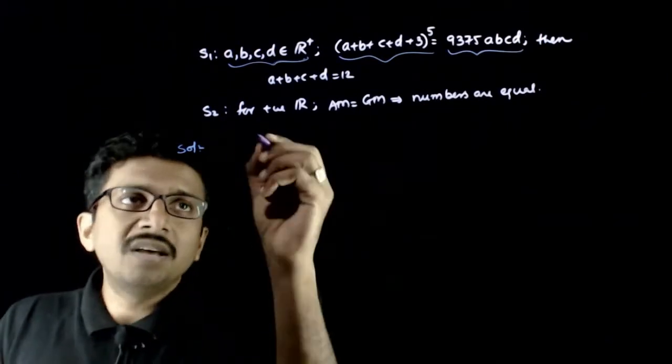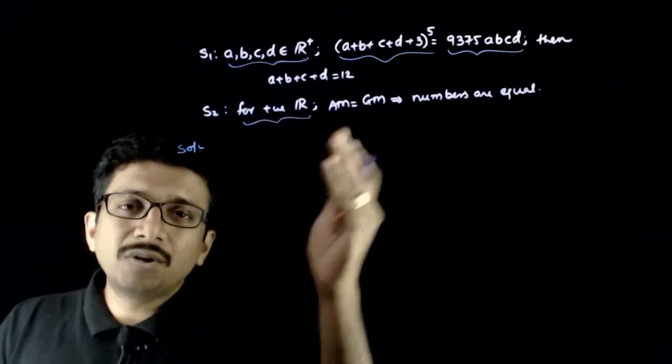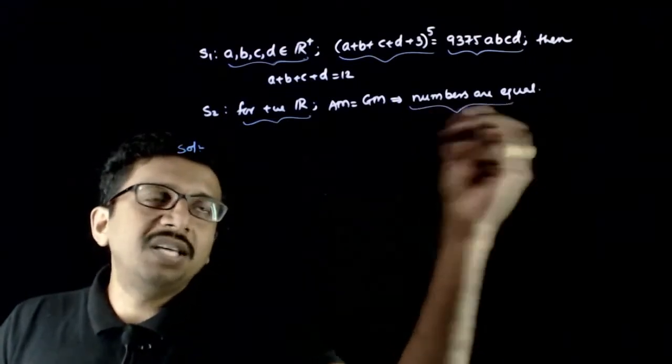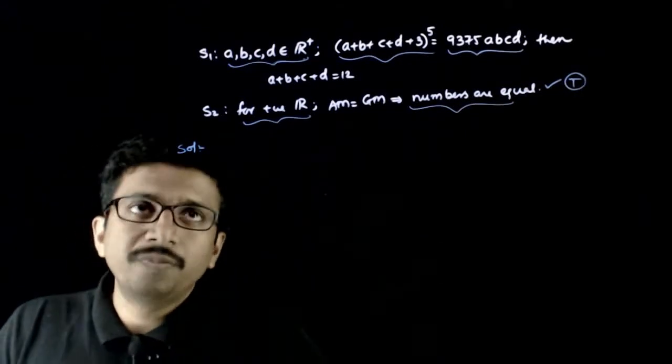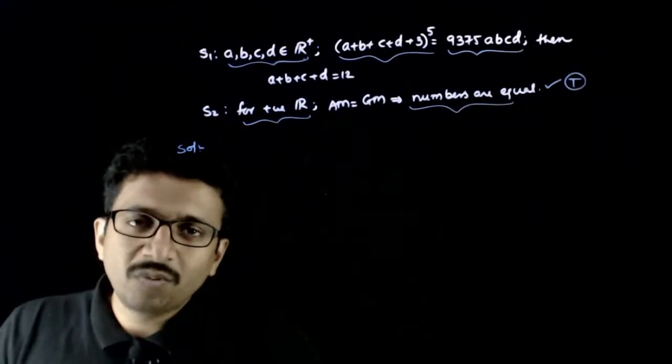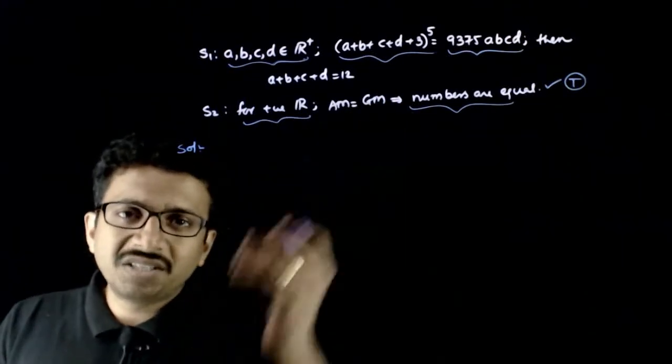The second statement is for positive real numbers, if arithmetic mean of the numbers is equal to geometric mean, then the numbers have to be equal. Statement 2 is obviously right, so there is no doubt about statement 2. You have to check whether statement 1 is true. Let us go with the concept which is given in statement 2.